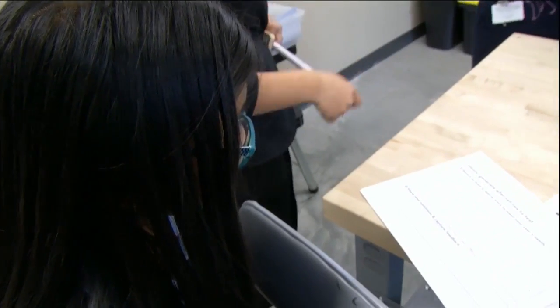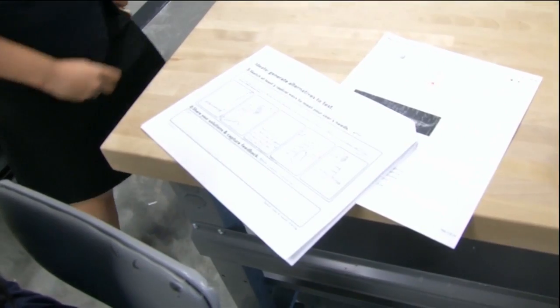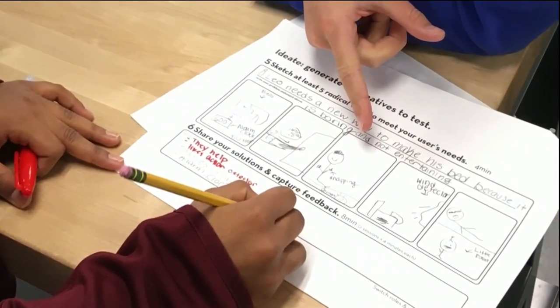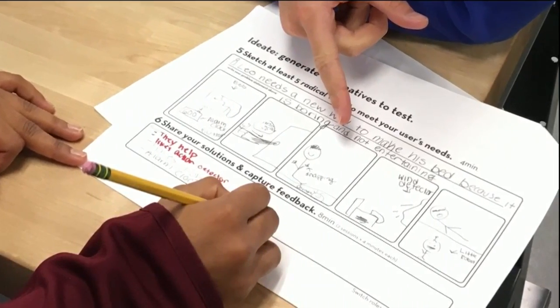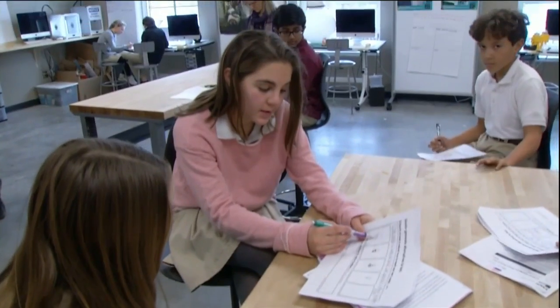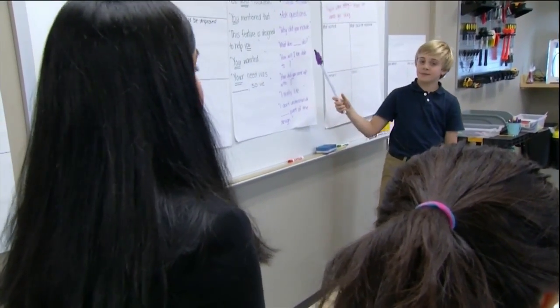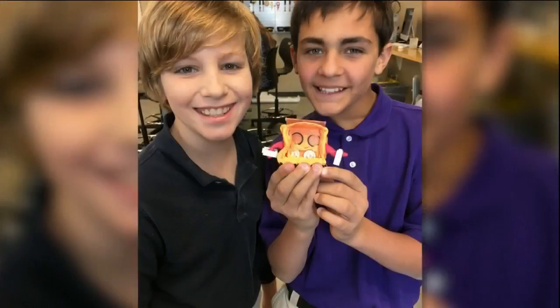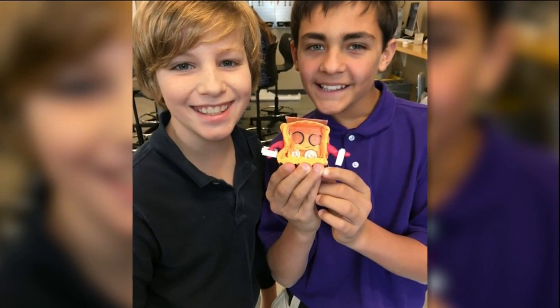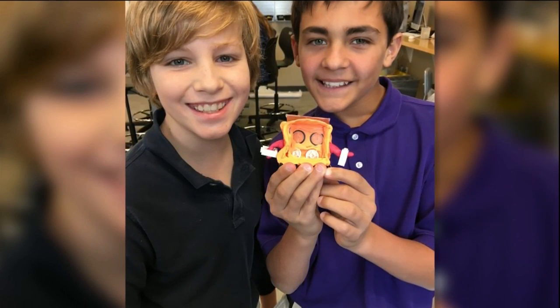One project involves designing special chairs for fictional characters. Each student was given a character with certain needs — for example, a slip of paper might say: 'Neil is an astronaut traveling in space, he has a bulky spacesuit and likes to drink his Tang — create a chair for him.' Kids had to think about their user the whole time they were planning and designing. The design process is iterative: kids build something, try it, and add details to make their models better.